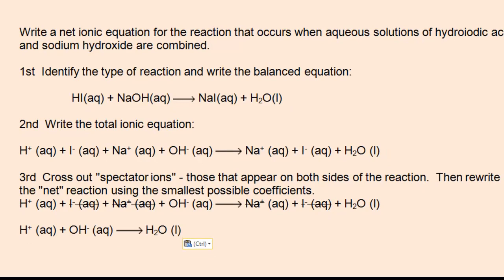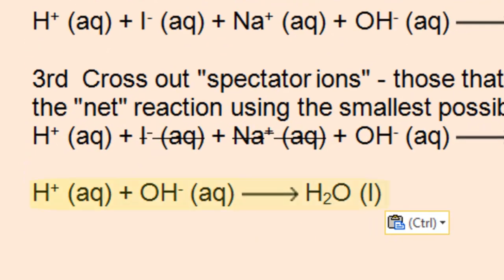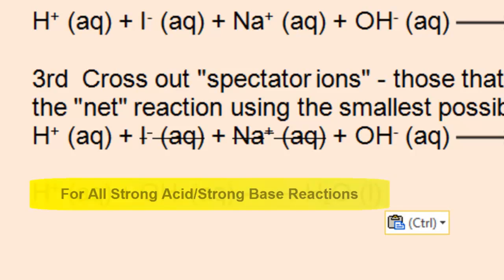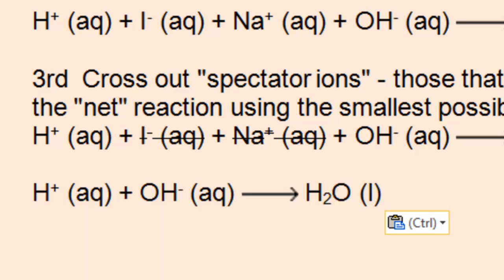The final step is to cross out the so-called spectator ions, those ions that appear on both sides of the chemical equation. Then rewrite the net reaction. In this case, it's a hydrogen ion and a hydroxide ion making water. For all strong acid-strong base reactions, the net ionic equation will reduce to a hydronium ion and a hydroxide ion producing water.